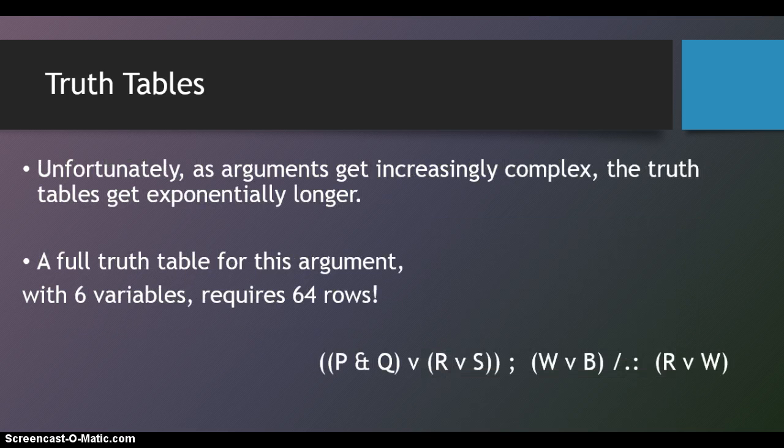Unfortunately, as arguments get increasingly complex, the truth tables get exponentially longer. A full truth table for this argument, with six variables, requires 64 rows.